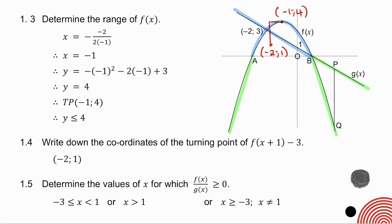They're both negative when x is greater than 1. At minus 3, f of x is 0 — zero on the top of a fraction is fine, so I include minus 3. At 1, they are both 0, which means g of x is 0 and I cannot divide by 0, so I may not include 1. This means x is greater than or equal to minus 3, less than 1, or x is greater than 1 — essentially everything greater than or equal to minus 3, excluding 1.